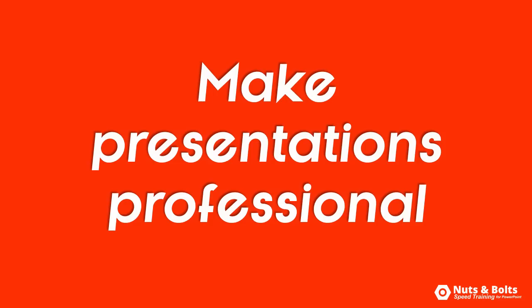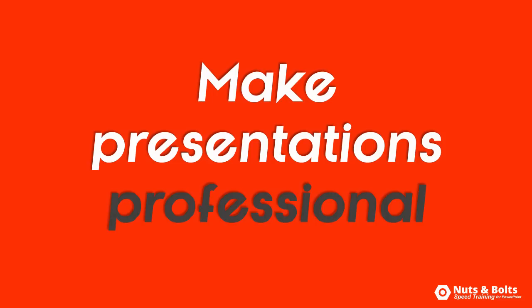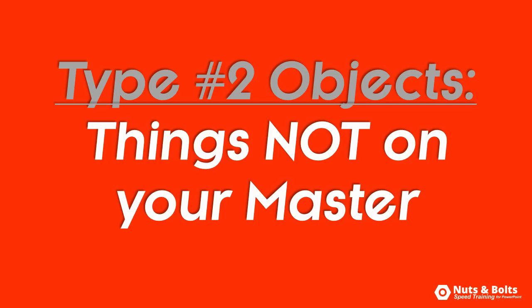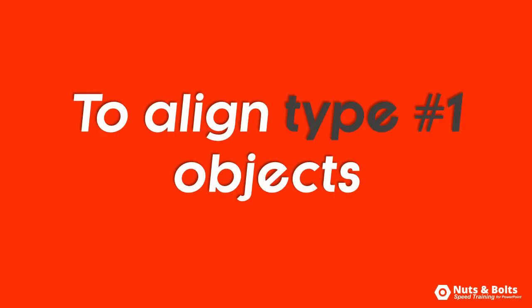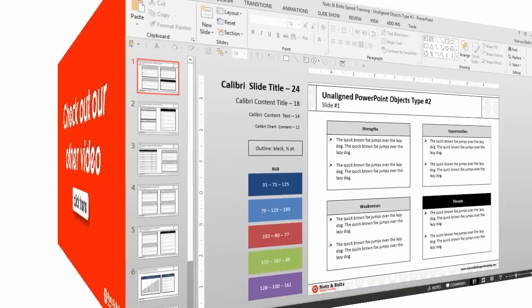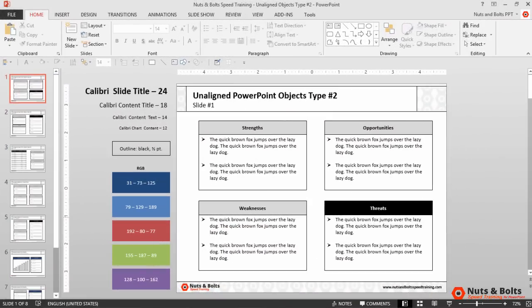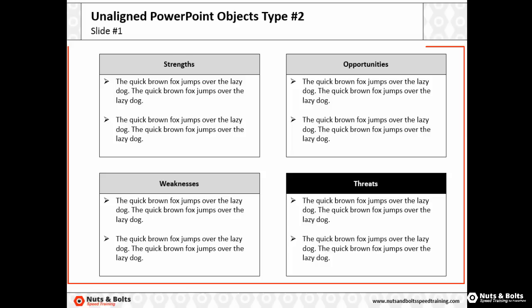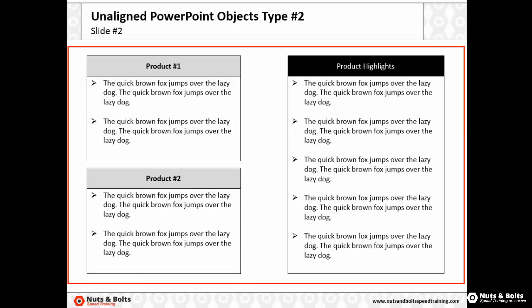I define type 2 objects as anything not set on your slide master. To see how to align type 1 objects, check out our other video. Here in PowerPoint, I'll hit Shift+F5 for slideshow mode so you can see the problem we're going to fix — just look at my boxes there in the center of my slide as I flip between slides.